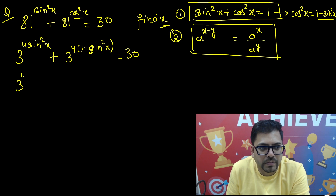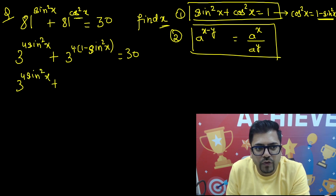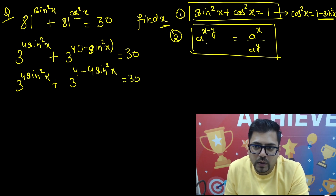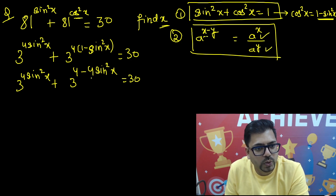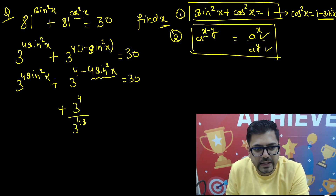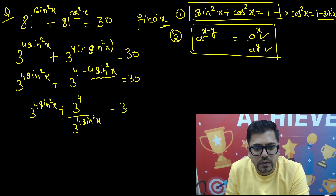Expanding the exponent: 4 times 1 is 4, and 4 times minus sin²x is minus 4sin²x. So the second term becomes 3 raised to power (4 minus 4sin²x), which equals 30. Applying the exponent rule, this negative part moves to the denominator: it becomes 3 raised to power 4 divided by 3 raised to power 4sin²x. The first term remains 3 raised to power 4sin²x, and the equation equals 30.